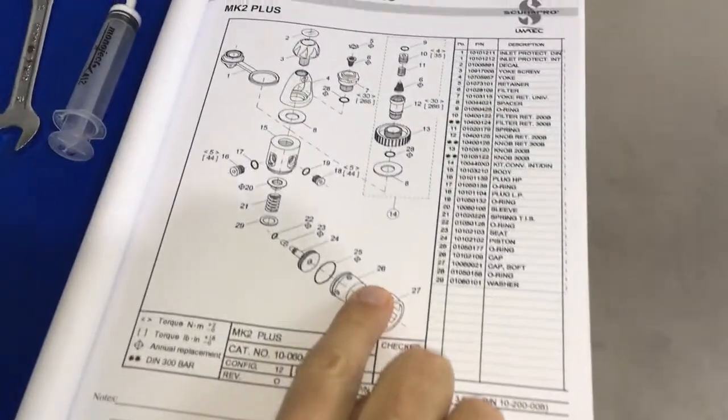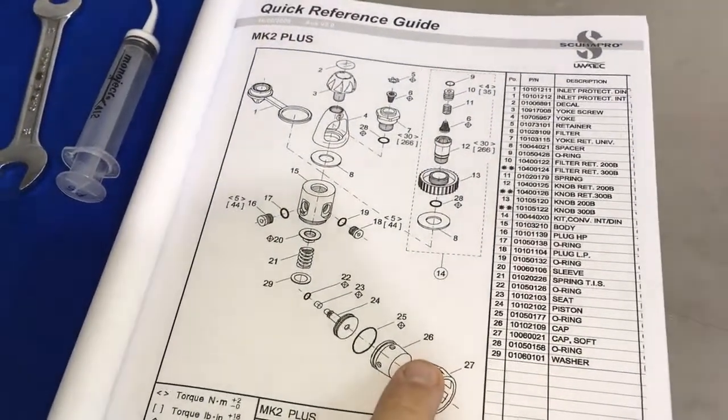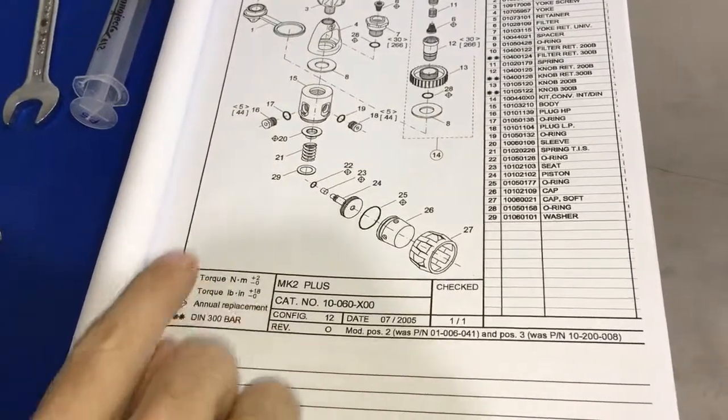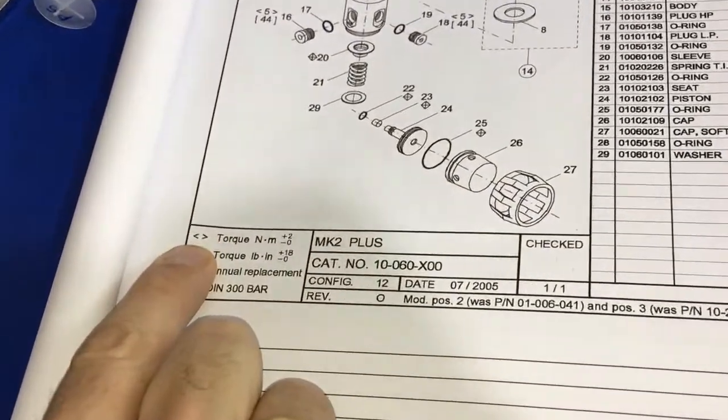On the schematic you can see the blown out first stage components. You can also see that there are torque settings down on the side. Torque settings here are in the brackets, and they're in Newton meters.